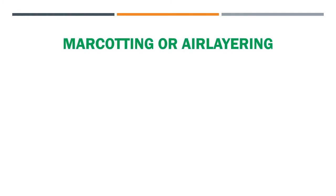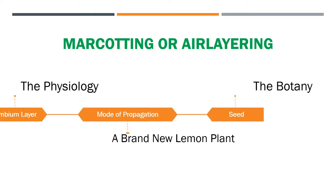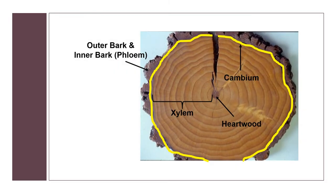Welcome back to AgriBeats. Today our topic is about marcotting or air layering, which is one of the methods in plant propagation. There is a need for us to understand a little bit of physiology and botany so that we will know what we are doing with our plant to come up with a brand new plant — a brand new lemon plant as our example here.